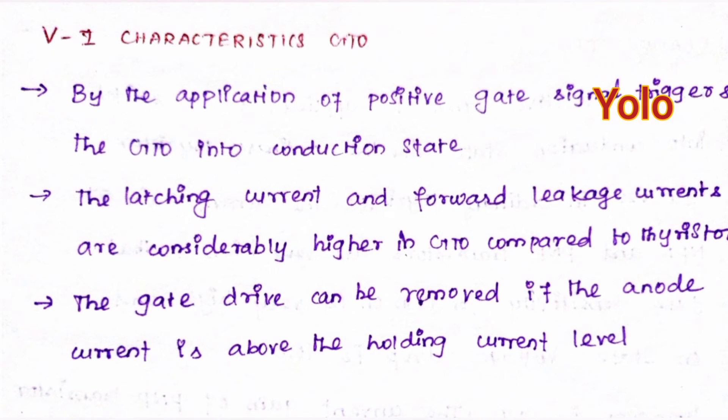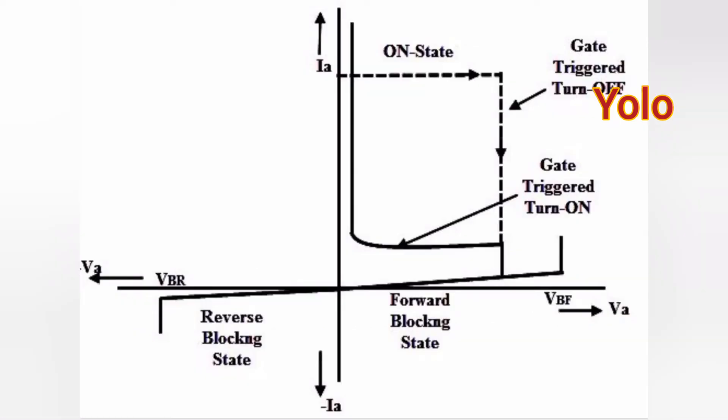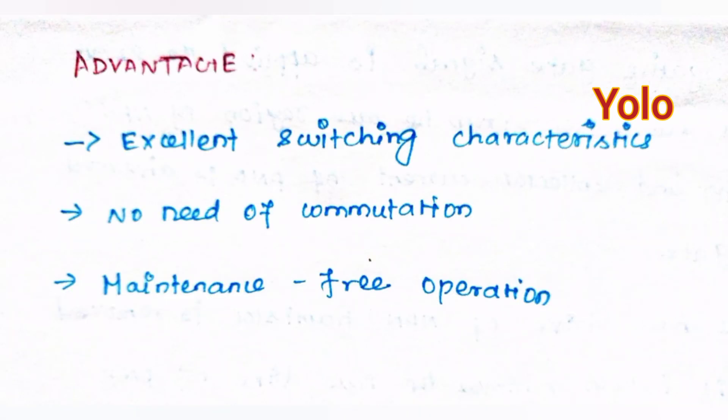Regarding the V-I characteristics of GTO: application of a positive gate signal triggers the GTO into conduction state. The latching current and forward leakage currents are considerably higher in a GTO compared to a thyristor. The gate drive can be removed if the anode current is above the holding current level.